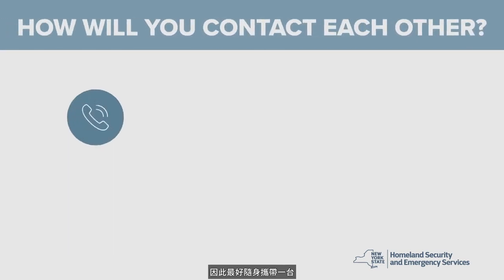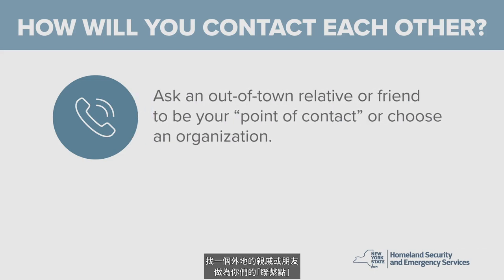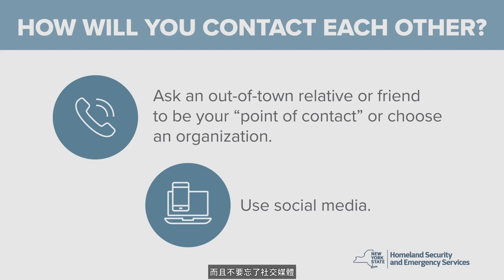Think about how your family members will stay in contact with each other in an emergency. Ask an out-of-town relative or friend to be your point of contact, or choose an organization for everyone in your family to contact. And don't forget about social media, which can be helpful for communications in an emergency, even if it's just to let others know you are safe.